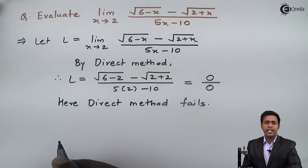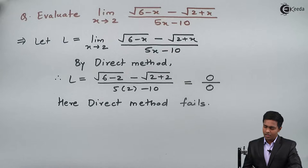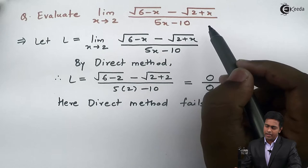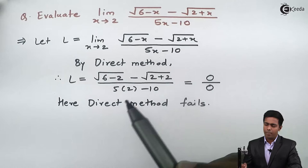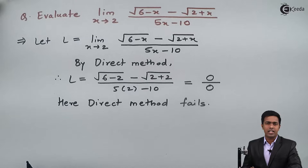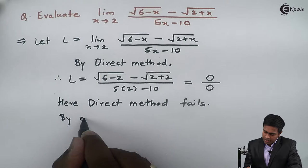Now if the direct method fails, we have to look for some other method to get the solution. If you observe the given term once again, you'll find that there are two square roots in the numerator with a minus sign in between. Whenever we have square root terms with a minus or plus sign in between, we apply the method of rationalization, where we multiply the numerator and denominator with the conjugate of that term. So here I will use the method of rationalization.